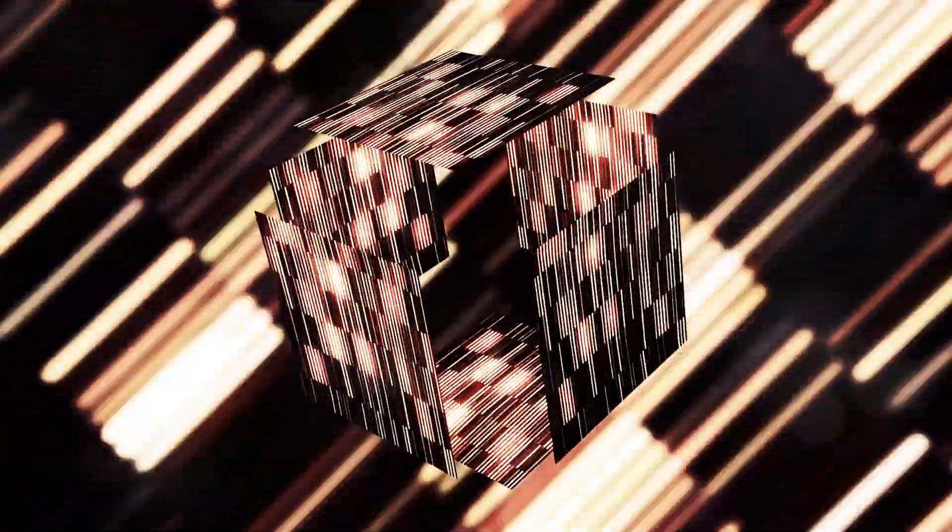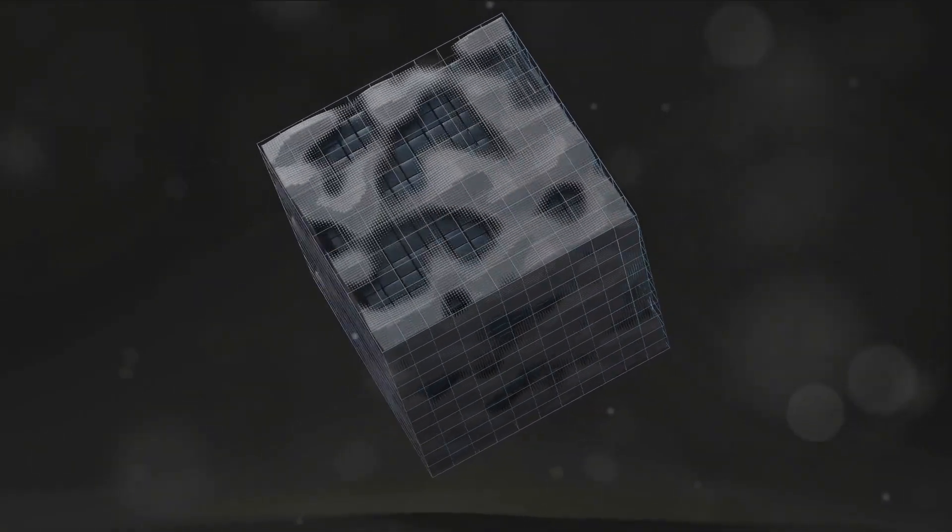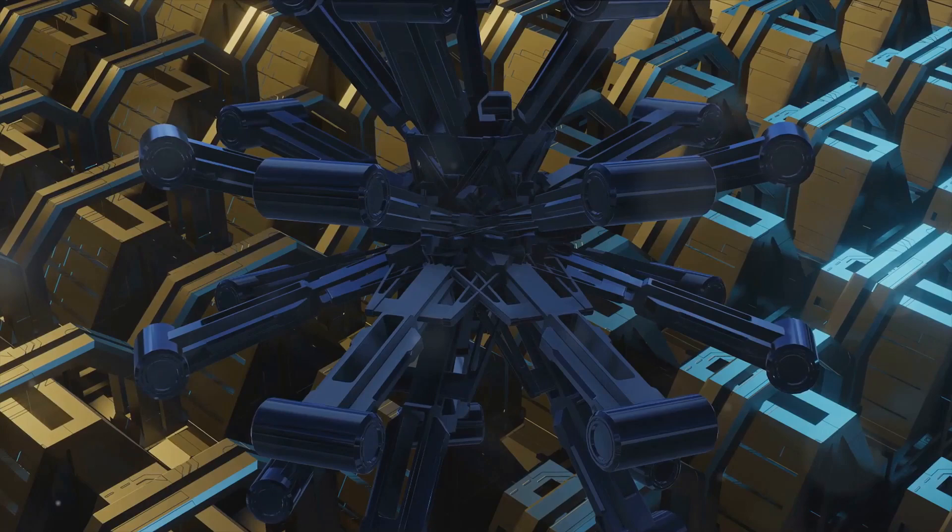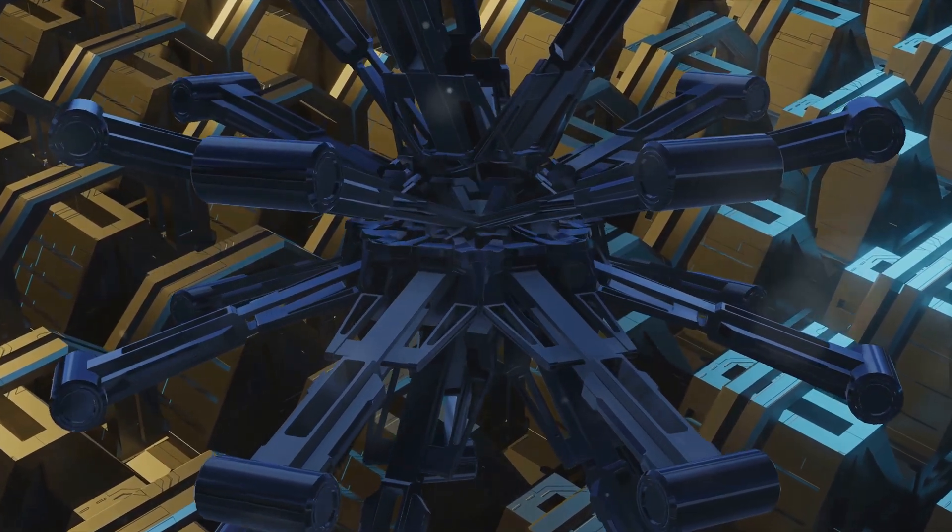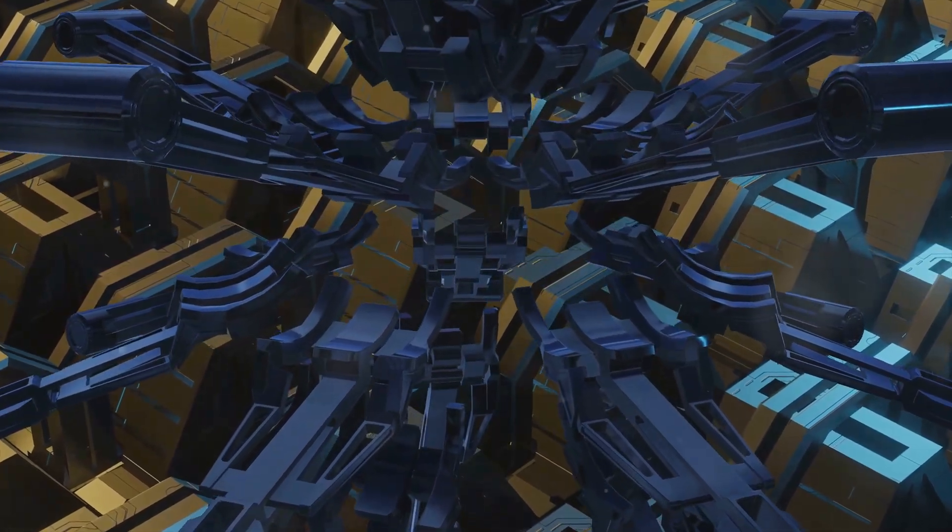We typically comprehend the universe in three dimensions of space - length, width, and height - and one dimension of time. Together, they form a four-dimensional continuum known as space-time. This continuum is like a fabric upon which the events of the universe unfold.